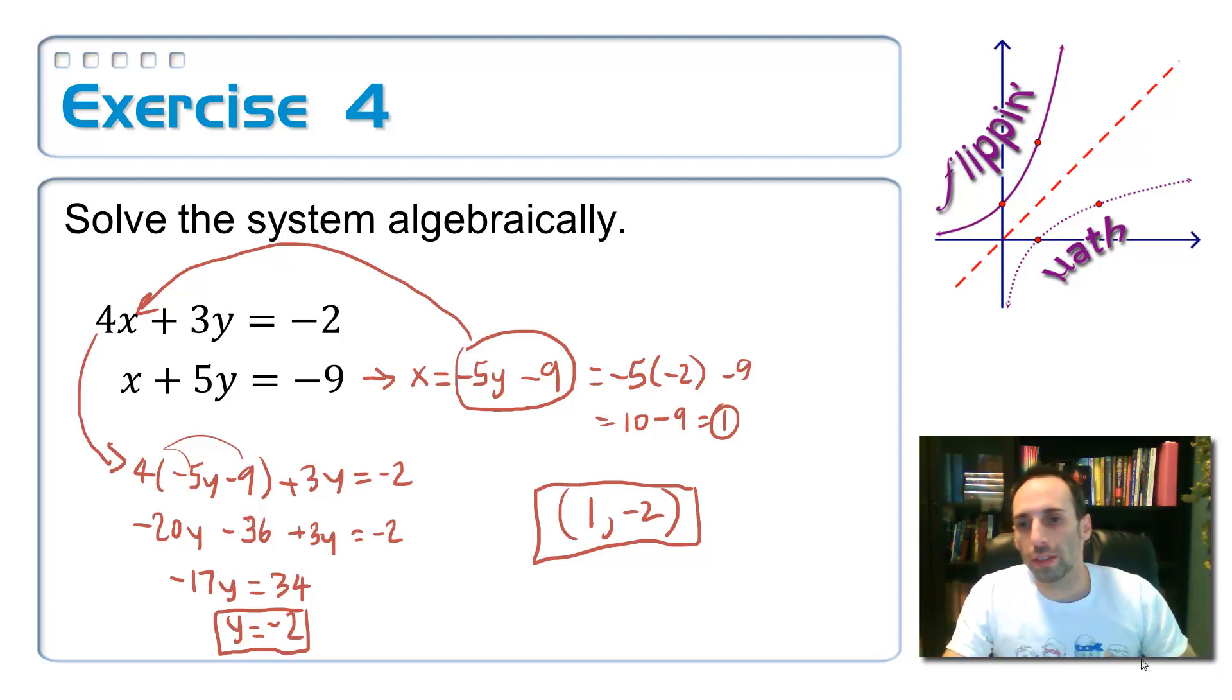So whenever I substitute that thing in there and simplify, I get y is equal to negative 2. I take the negative 2 and put it into one of the two original equations. The one that has x by itself is easiest. And I get x equals 1. That has an ordered pair, being careful to see which one comes first. The x comes first, 1, negative 2. So that concludes solving a system of equations algebraically by using the substitution method.